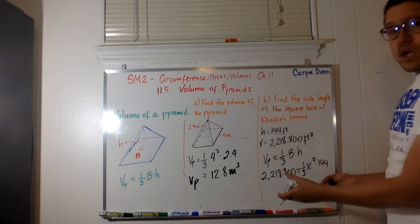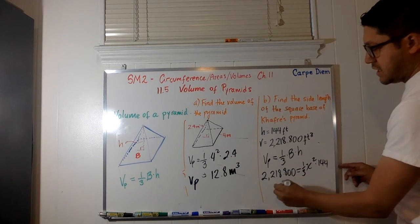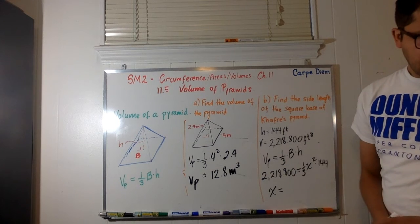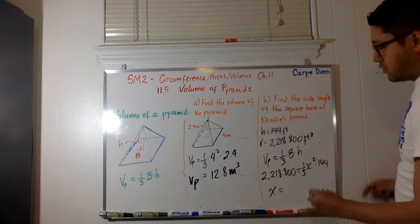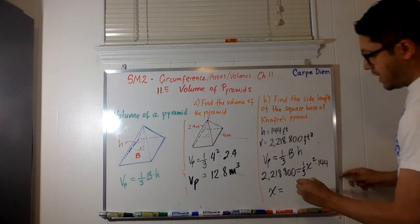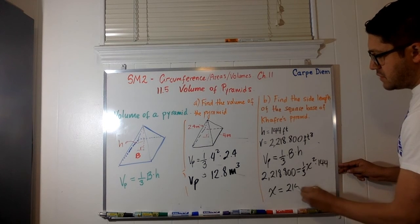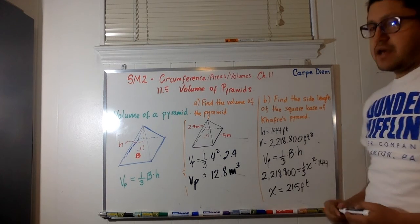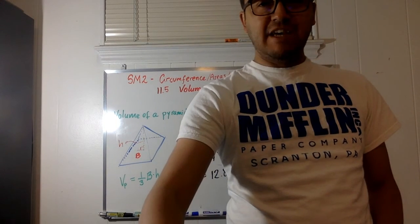This is an equation where you just have to solve for x, and eventually, after you do all this combination of values, your value is going to be 215 feet. And that's it. That's how you do it. Thank you.